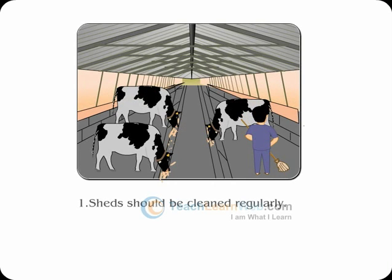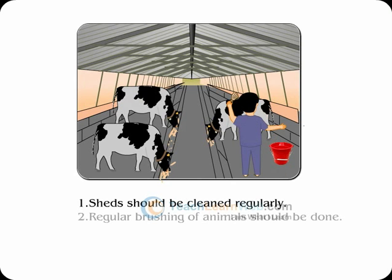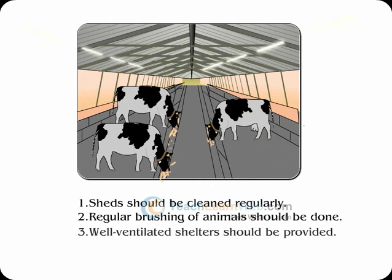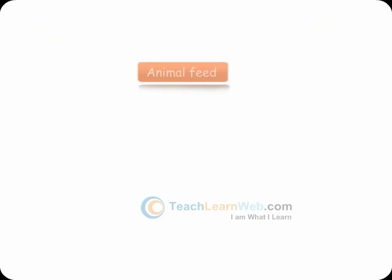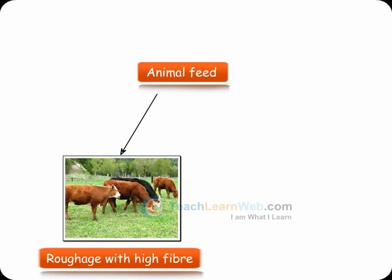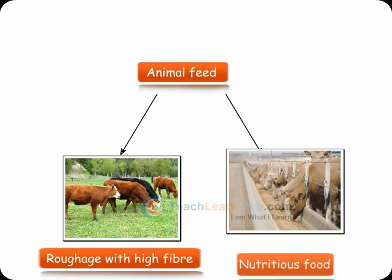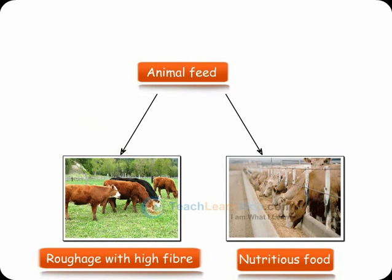Shed should be cleaned regularly, and regular brushing of animals should be done. A well-ventilated shelter should be provided and balanced food should be given. Animal feed should contain roughage with high fibre content, and concentrates with high levels of proteins and other nutrients.